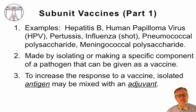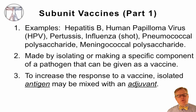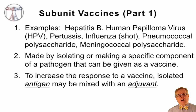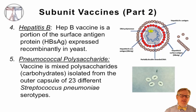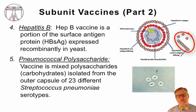The third type are subunit vaccines. Examples include the hepatitis B vaccine, the human papillomavirus vaccine, the pertussis vaccine, the injected influenza vaccine, the pneumococcal polysaccharide vaccine, and the meningococcal polysaccharide vaccine. These vaccines are made by isolating the specific component of a pathogen — a protein or carbohydrate — to generate an antibody response. An adjuvant is often mixed in to increase the response. The hepatitis B vaccine is generated against a portion of the hepatitis B surface antigen, made as a recombinant protein in yeast and mixed with adjuvant.